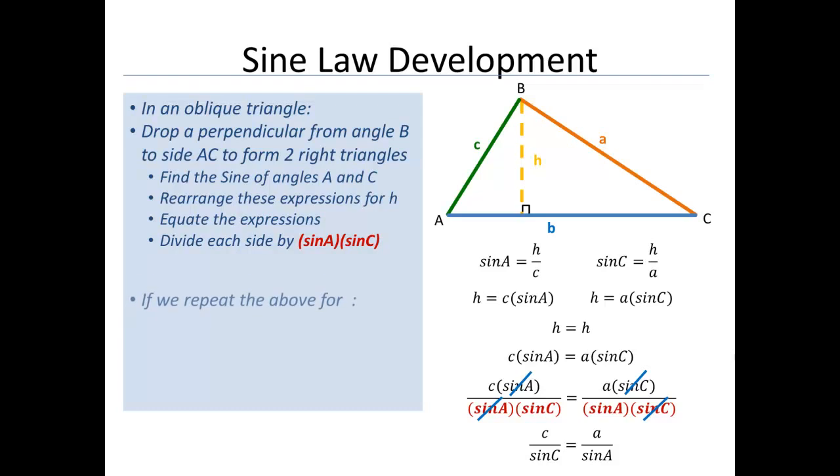but I could do the same thing and repeat all the above steps for taking the perpendicular from angle C to side AB. And then I could repeat it again from angle A to side BC, and we'd see that we'd get the third ratio would be showing up.